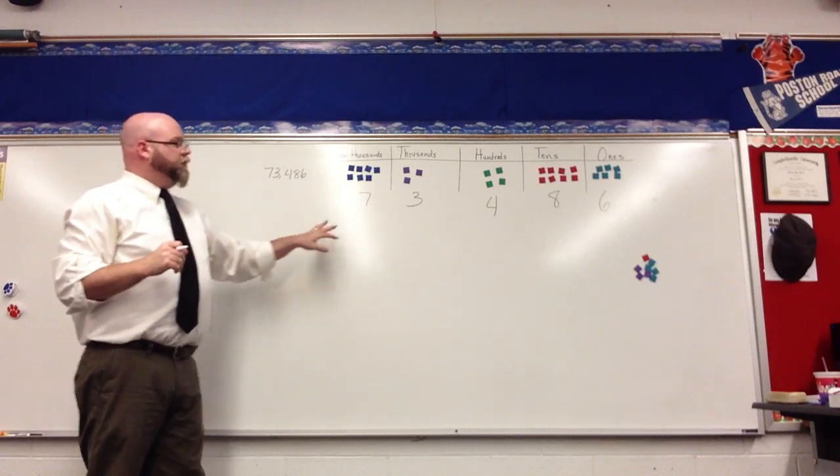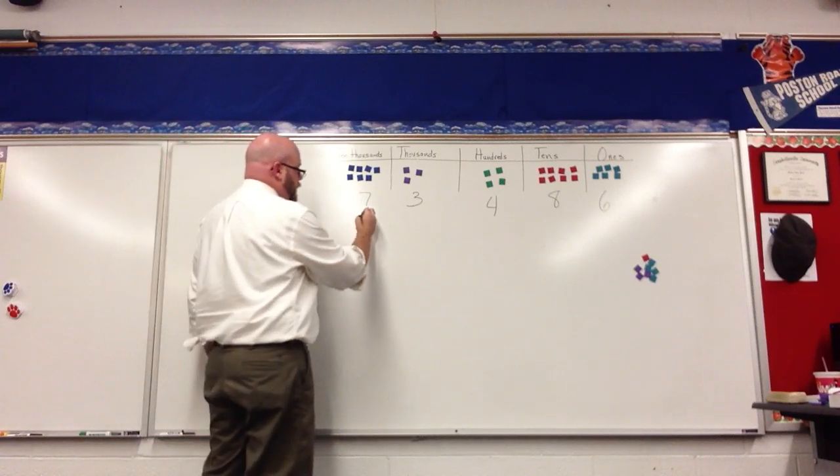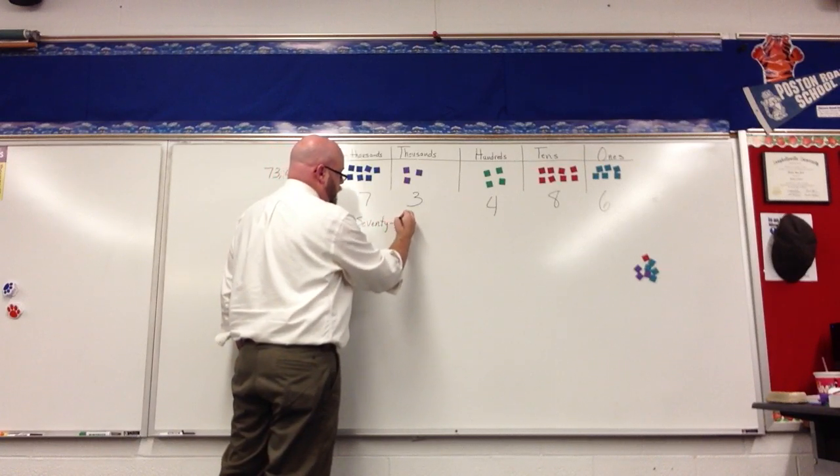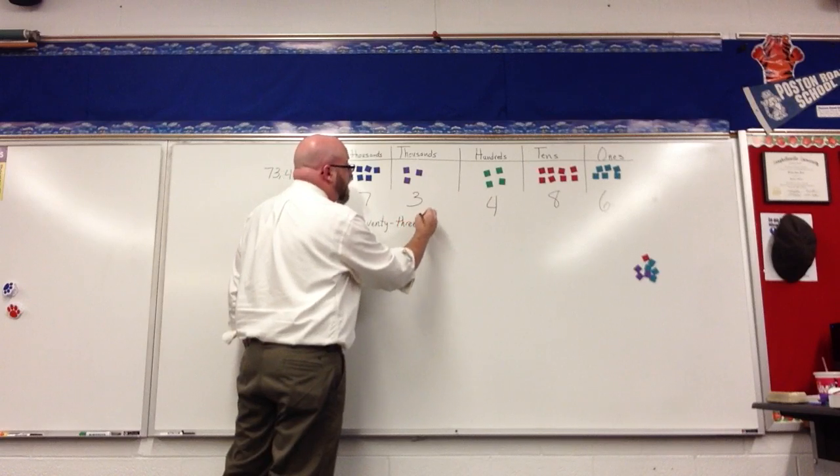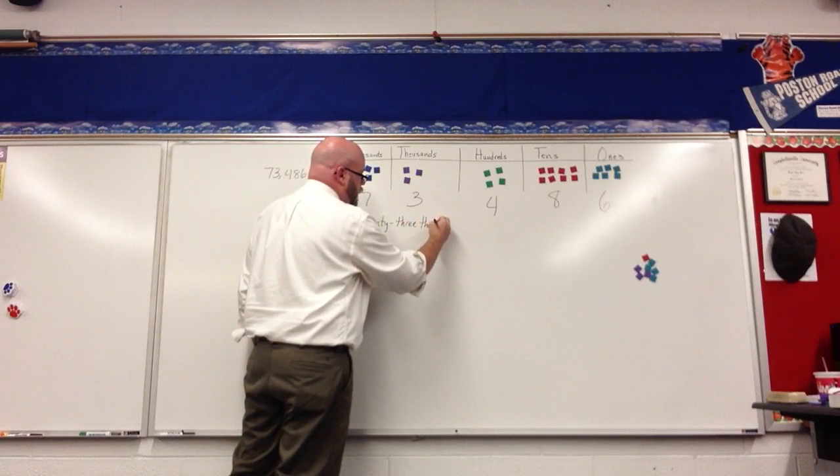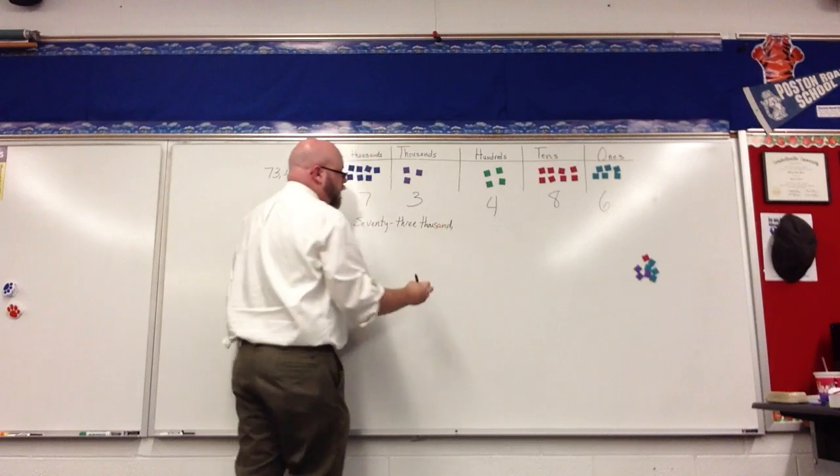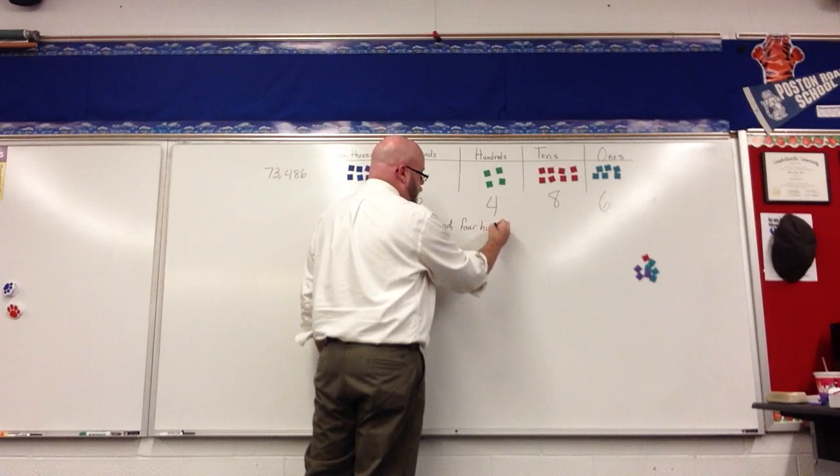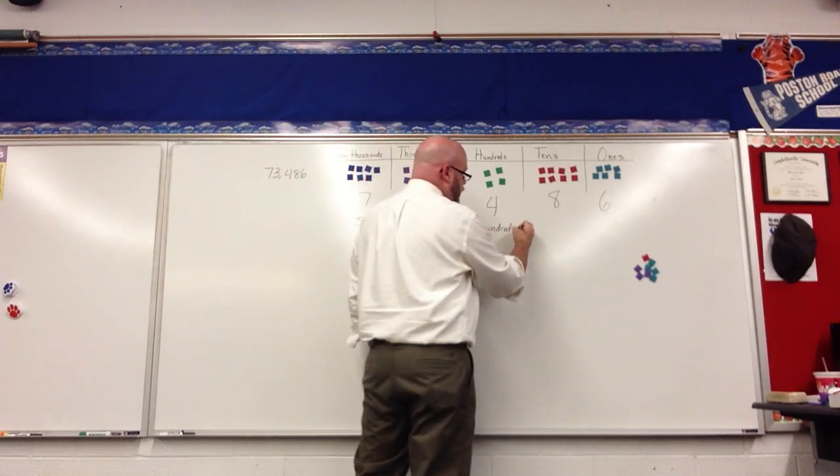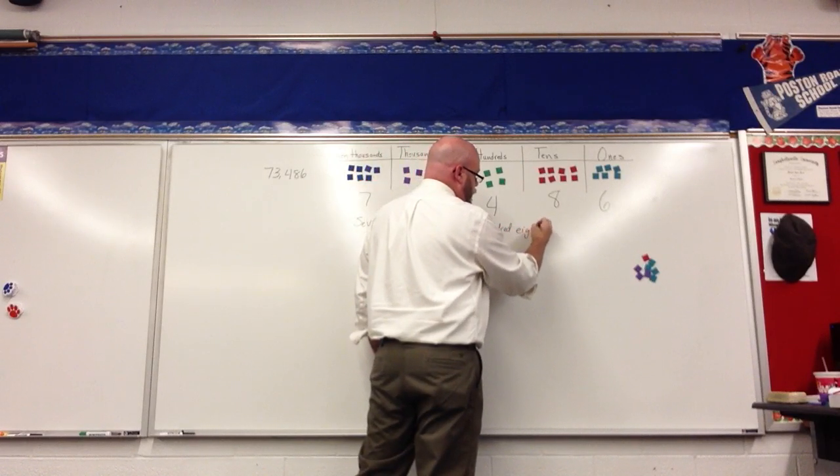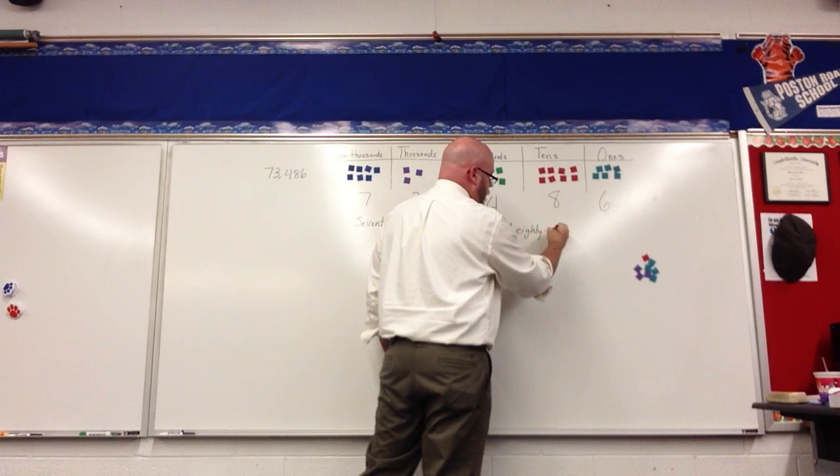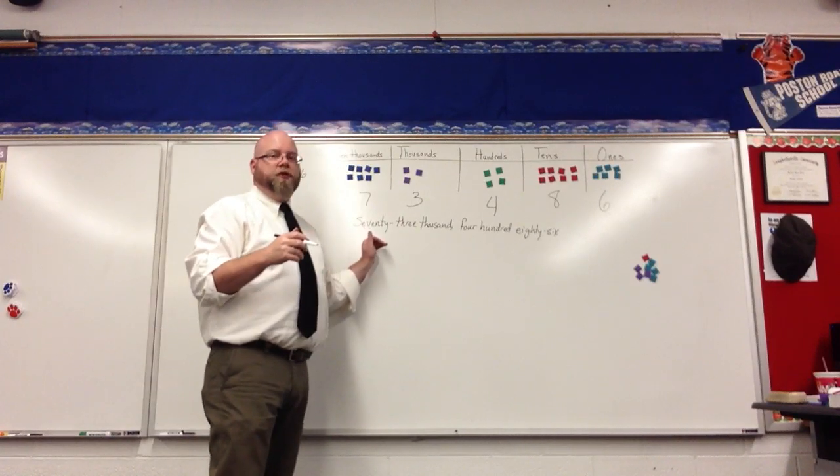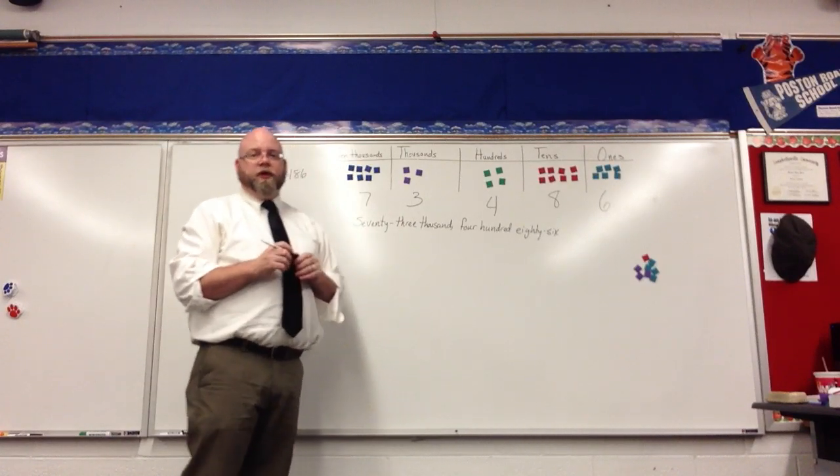If I were to write this number in word form, it would be 73,486. Writing a number in word form means you just put the words as you would read the number out loud.